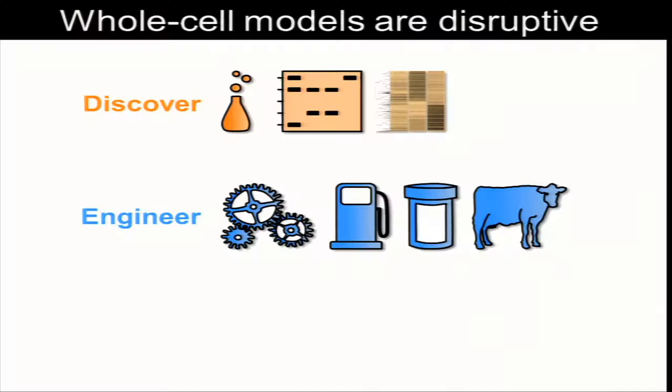The second thing we can do is engineer cells. If we can build a model which predicts the rate at which a bacterium produces a biofuel, we can use that model to reason about how to make that bacterium produce that biofuel at a faster rate.